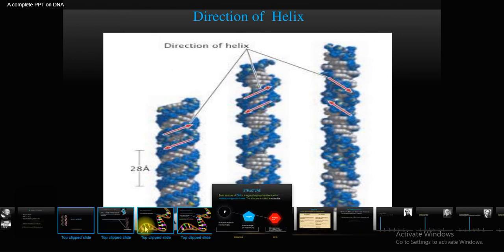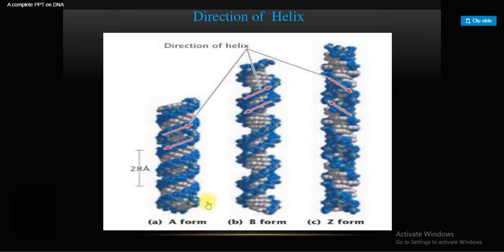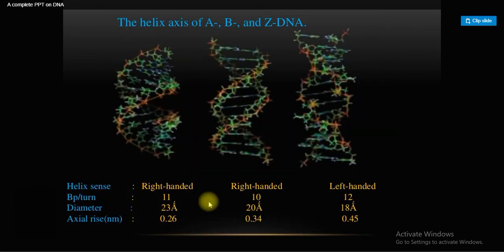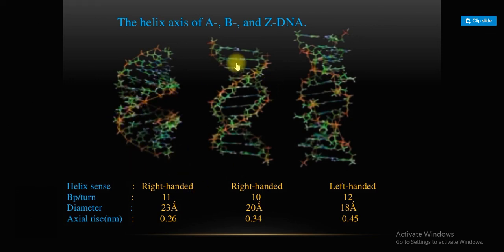Looking at the direction of the helix as shown in the diagram: A-DNA contains 11 base pairs per turn and forms a right-handed spiral. B-DNA is also right-handed and contains 10 base pairs per turn. Z-DNA is left-handed and contains 12 base pairs per turn.